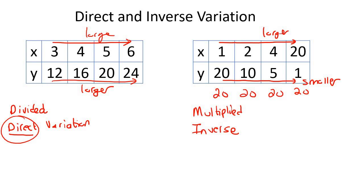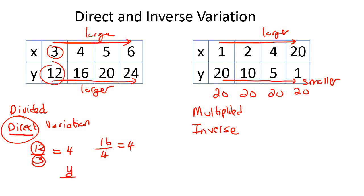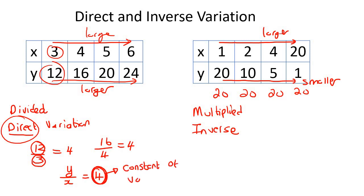So just to remind ourselves what happened: for the direct variation table, we were dividing. We said 12 over 3 gave us 4, then 16 over 4 gave us 4. Every time we took the y value and divided it by the x value, we kept getting the same number — we kept getting 4. This number that stays the same is called your constant of variation. We are looking at this topic of variation, and this is just the constant number.